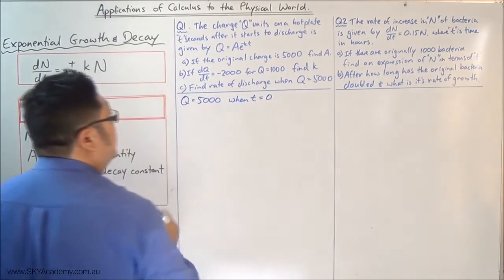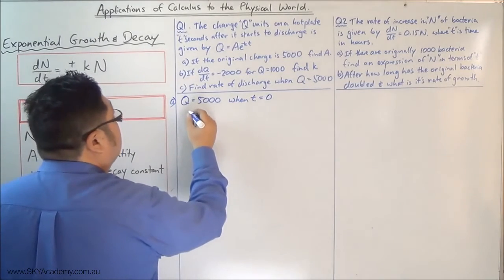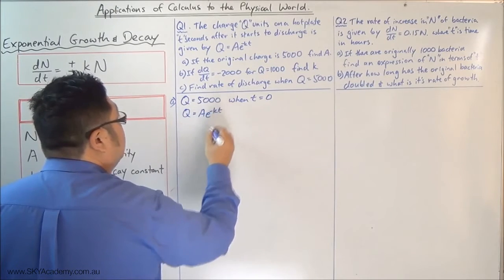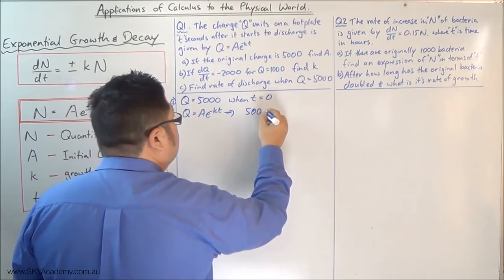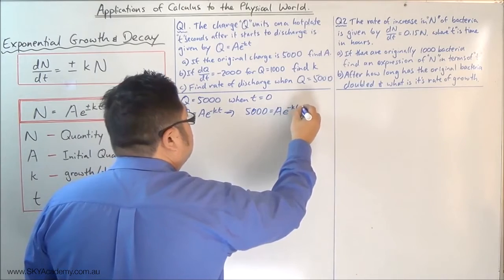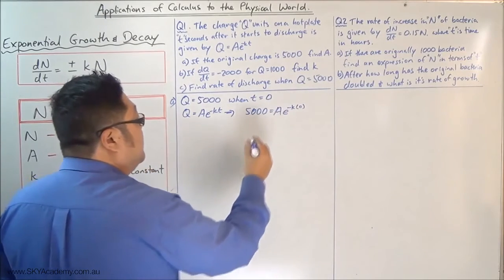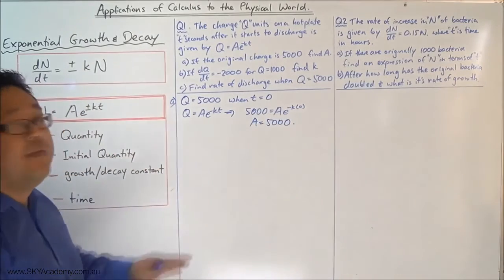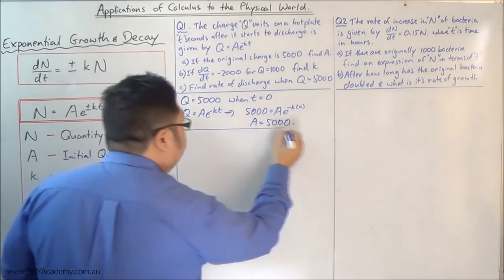The question says: if the original charge is 5000, find a. That's pretty easy — a is always going to be the initial quantity, so a equals 5000. The way we work it out formally: the quantity q equals 5000 when t equals zero. So we have 5000 equals a times e to the minus k times zero. Zero times k is zero, e to the power of zero is one, therefore a equals 5000.